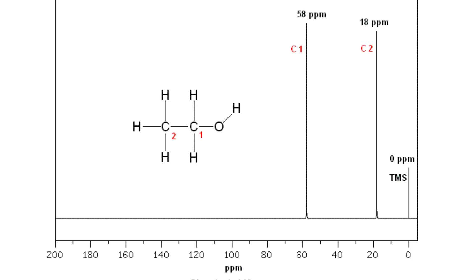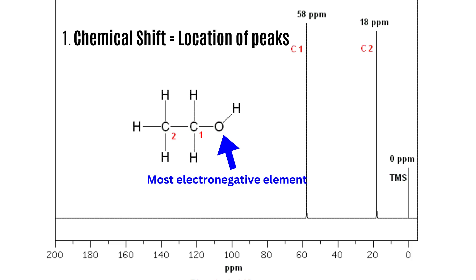When interpreting a C-NMR spectrum, we need to consider two things. One, the chemical shift, or the location of the peak in the spectrum. The chemical shift is inversely proportional to the distance between the proton and any electronegative elements. More simply put, protons that are closer to any electronegative elements are more chemically shifted to the left.